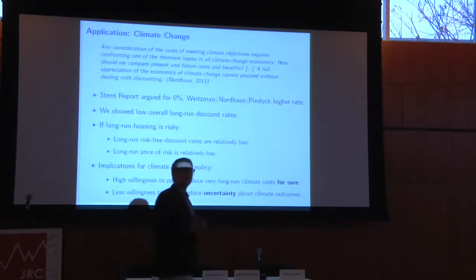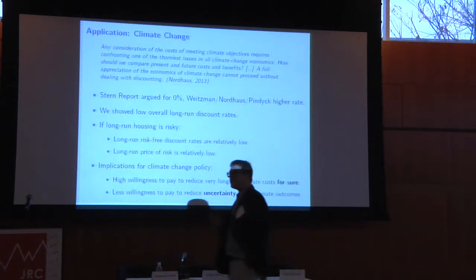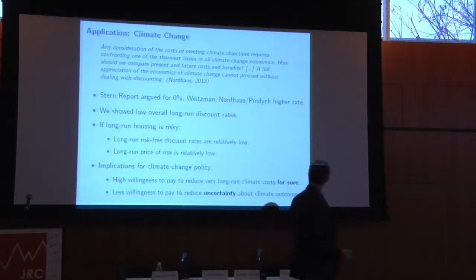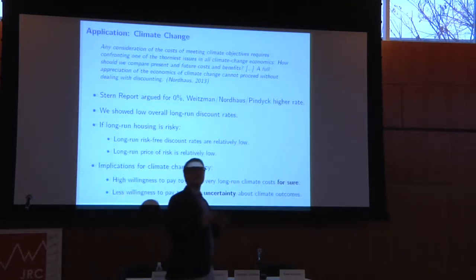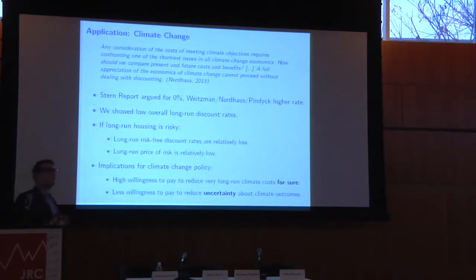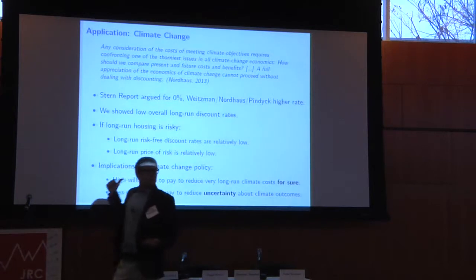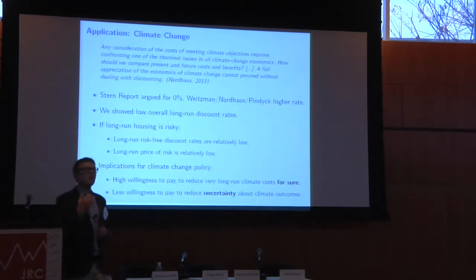Let me return to the motivating example of climate change. In this literature for decades, there's been a fight over what discount rates to apply to climate damages far into the future. Nick Stern in the Stern Review suggested we shouldn't discount at all — it's ethically unfair to discount future generations who have no voting power today. On the other hand, Weitzman, Nordhaus, and Pindyck argued for higher rates — essentially taking the rate of return to capital, around 6 or 7%, as the discount rate. Applying that Gordon growth model logic to long-run housing is, as I showed, inconsistent with the discount rates households seem to actually apply.